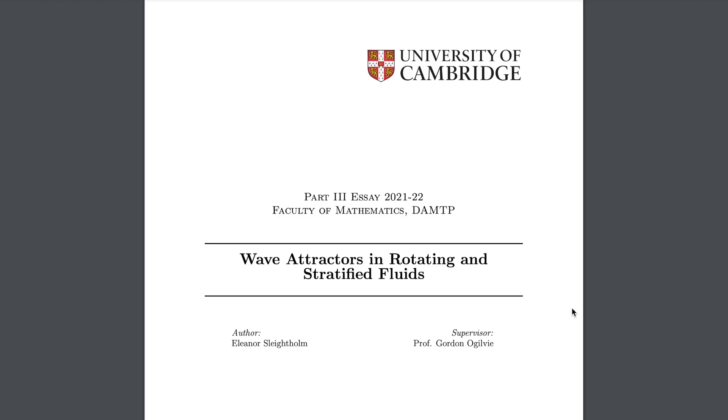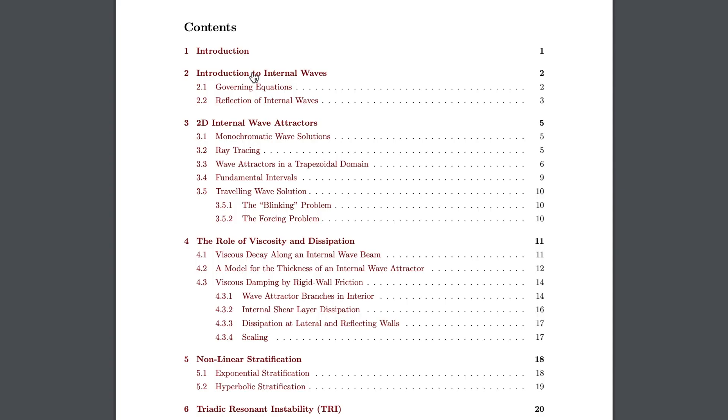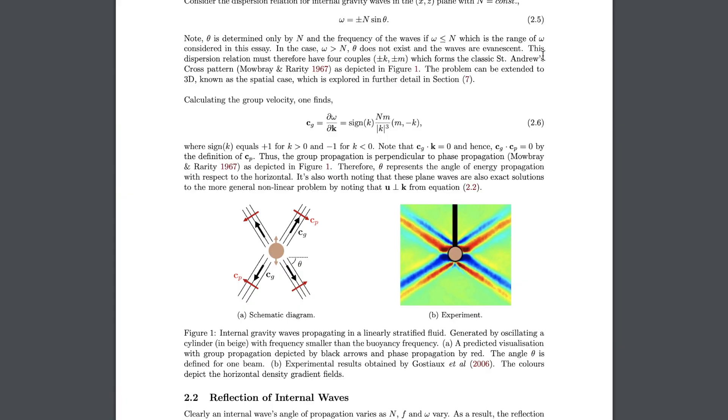In terms of format, I stuck to having an abstract — an overview of the whole dissertation — then an introduction, then the main body of text, then the conclusion. Something I found really helpful and highly recommend: have your dissertation introduction, but then also have an introduction to the preliminary material needed for the dissertation. The idea is that if someone hasn't learned the topic before, they get a good understanding. It also shows you have a good grasp of the base topics.